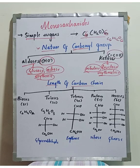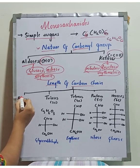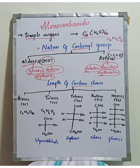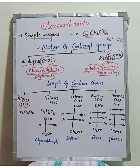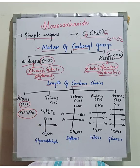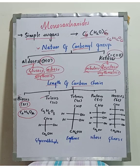Monosaccharides can also be classified based on the number of carbon atoms. First is biose, which has only 2 carbon atoms. Second is triose, which has 3 carbons, with the formula C3H6O3.